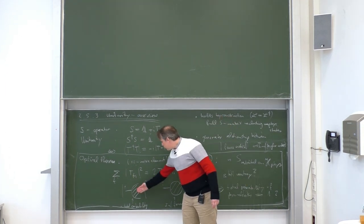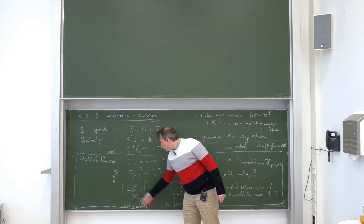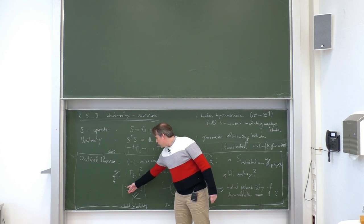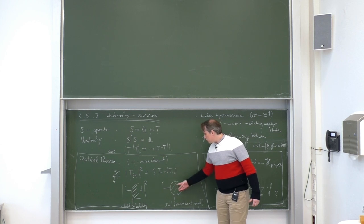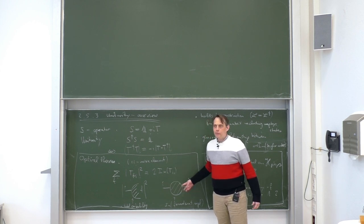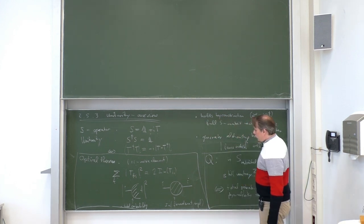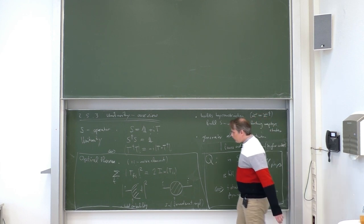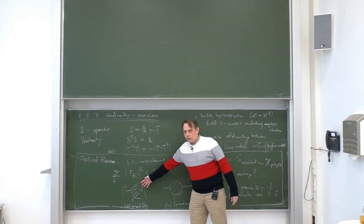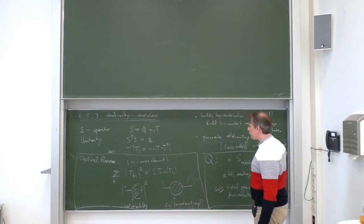The optical theorem is the thing we will check: the total probability of a fixed initial state into any final state is related to the imaginary part of the forward scattering amplitude of the same initial state. Lower orders actually fix uniquely the imaginary part of higher order loop diagrams in order for unitarity to be valid.